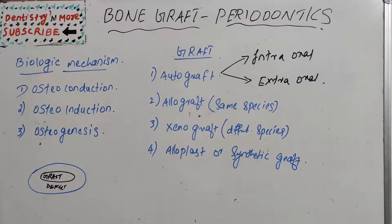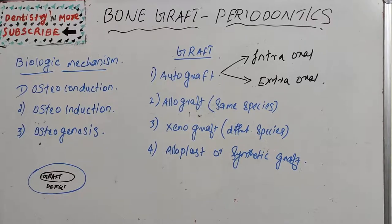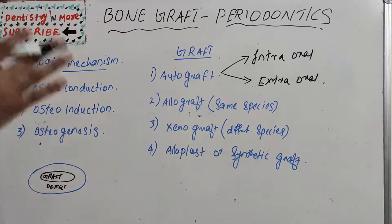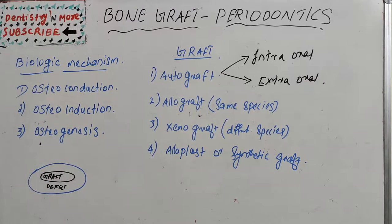Welcome back to another session in Dentistry and More. Today's topic in periodontics is bone grafts. Bone grafts are materials used for replacement or augmentation of bone — a procedure used to replace or restore missing bone or gum tissues. This session covers the biologic mechanisms involved in grafting and various types of grafts.